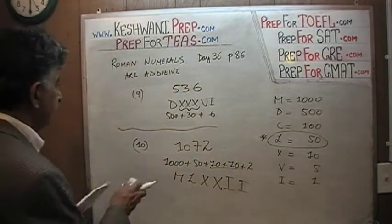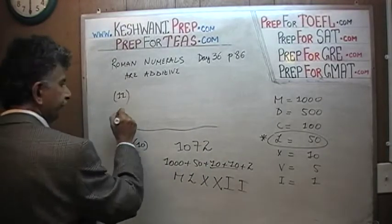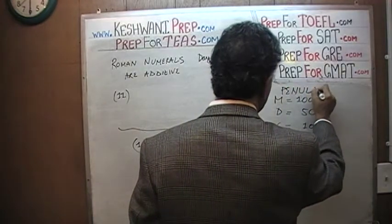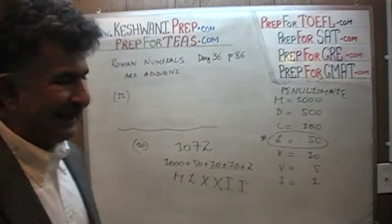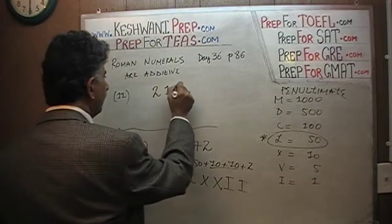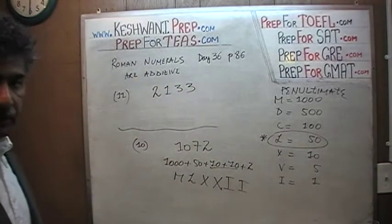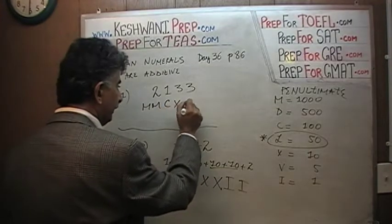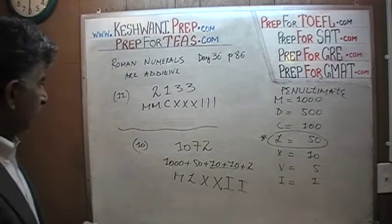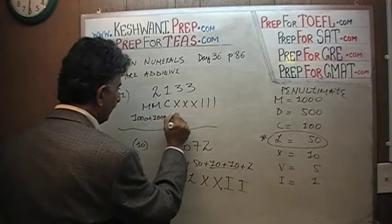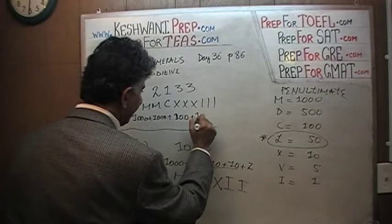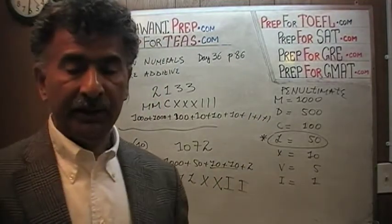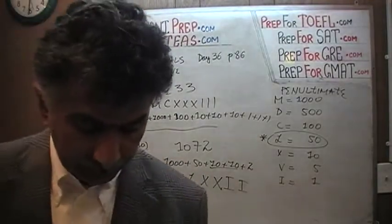Number eleven — the penultimate one, second to the last. Two thousand one hundred and thirty-three. Two thousand is a thousand plus a thousand — M, M. Then one hundred which is C. Then thirty which is X, X, X. And then three which is I, I, I. That's how they wrote two thousand one hundred and thirty-three — kept on adding numbers until they got where they wanted to go.